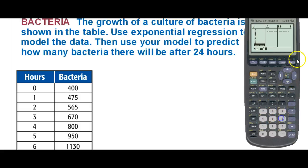And then in the other table, we'll put our 400, in other words, our number of bacteria. So, 475, 565, 670, 800, 950, and 1130. So, there are our two lists.